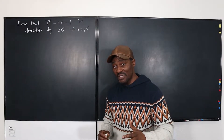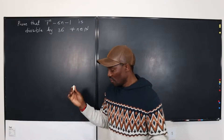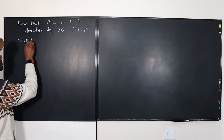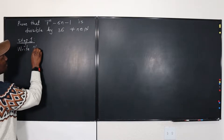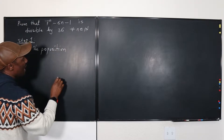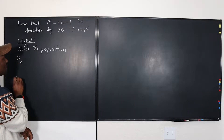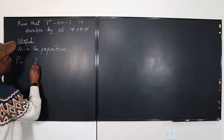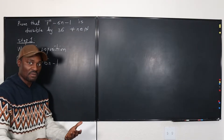The first thing you need to do is write the proposition. The proposition is what you're expected to show. Step one is: write the proposition. The proposition P(n) is such that 7 raised to power n minus 6n minus 1 is divisible by 36.